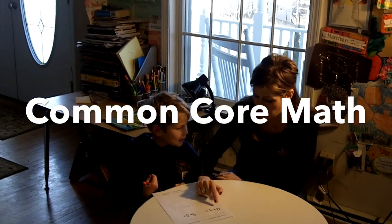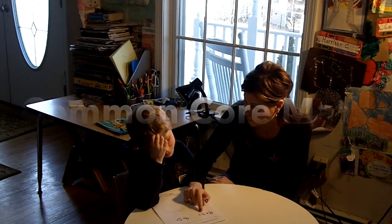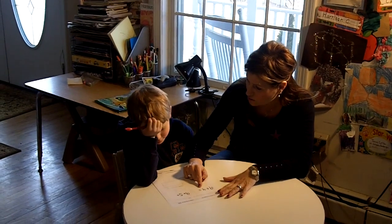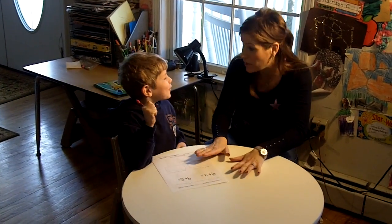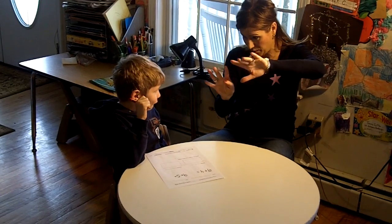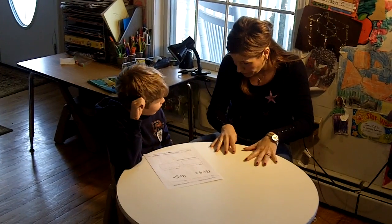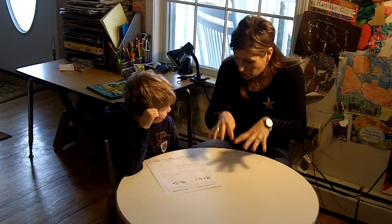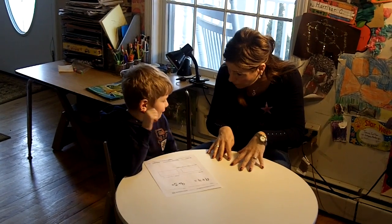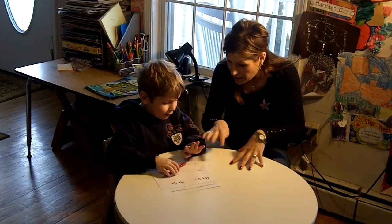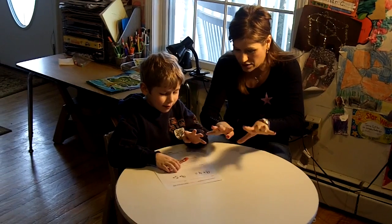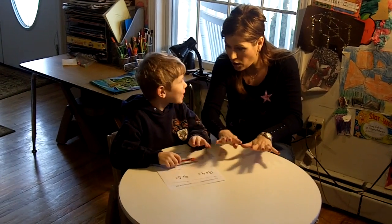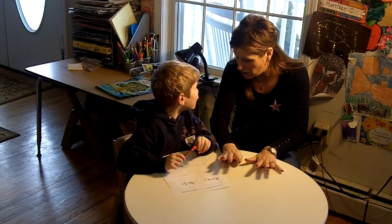Okay honey, so it's 9 plus 4. You add up — say you have 9 people at the party already. So 9 people are at the party, and 4 more come. So 9, put 4 fingers up: 10, 11, 12, 13. So 9 plus 4 equals 13. Mom, that's not how you do it.